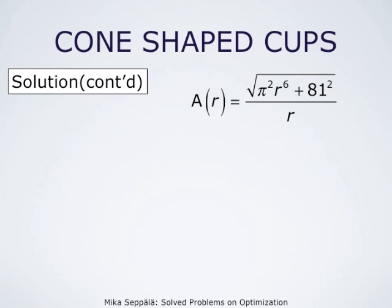Our task is to minimize this area — to find the value of r for which A of r is as small as possible. Clearly, we consider only positive values of r because r measures distance. So we have to understand how this function A of r depends on r, and to that end, we differentiate that function.